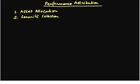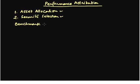Now since each asset class contributes something to portfolio performance, we need to see how much of this contribution is because of our asset allocation decisions and how much is because of our security selection. Let us say we have a benchmark for each asset class. What's a benchmark? Some sort of a standard. For example, the S&P 500 index could be a benchmark for equities.